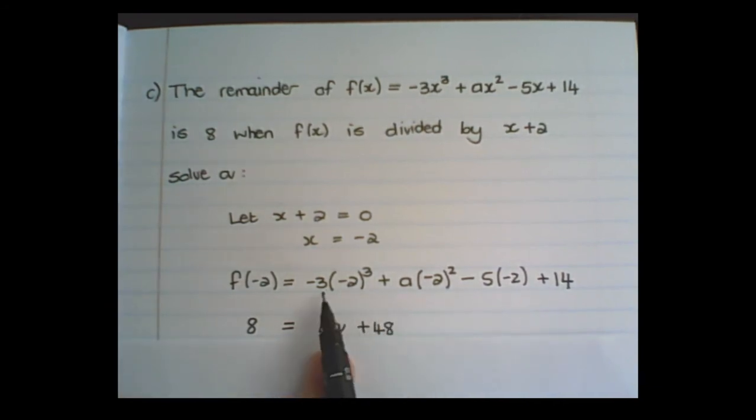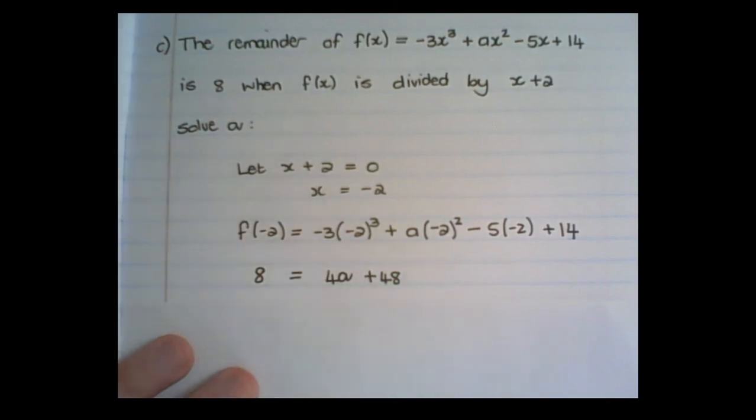This value comes from simplifying the expression. So -3 times -8 is +24, that becomes 4a + 10 + 14. So 24 + 10 + 14 is 48, and the 4a comes from multiplying out (-2)². Now I have a simple linear equation and can solve for a. So a = -10.